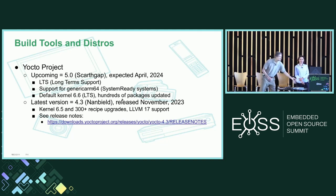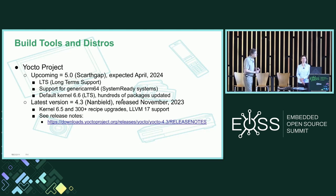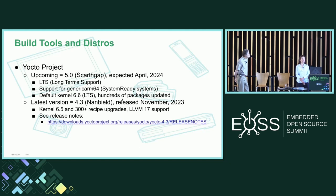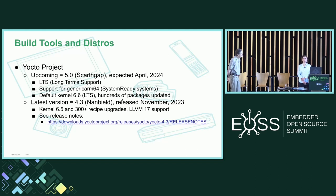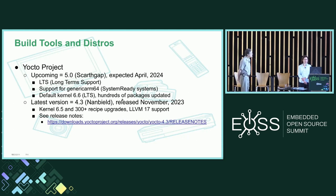On the Yocto Project, version 5.0 is coming any day — or any hour right now. It's officially expected in April and will be the new LTS. It has support for generic ARM64 for system-ready setups — the first time you can build a generic ARM image and boot it on all different platforms. The default kernel is 6.6 and there are hundreds of package updates as you would expect. The previous latest Yocto was 4.3 Nanbield, released in November, with kernel 6.5.